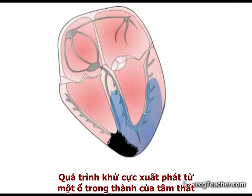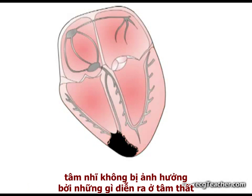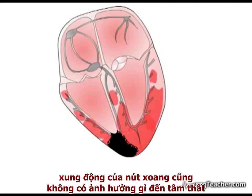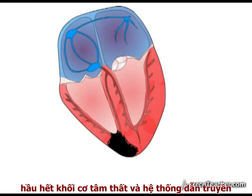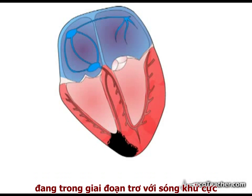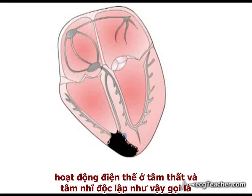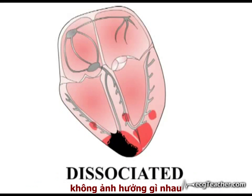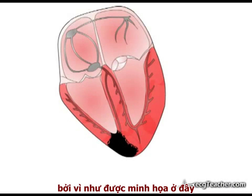Depolarization arising from a focus in the ventricle is not generally transmitted into the atria. Therefore, in VT the atria may remain uninfluenced by events in the ventricles, and the SA node carries on discharging at its own inherent rate. Equally, the SA node discharges have no effect on the ventricles, as the great majority of P waves arriving at the AV node find the conducting system and ventricular muscle mass refractory to depolarization due to the rapid rate of discharge from the abnormal focus. Electrical events in the ventricles and atria are dissociated — the two regions are both doing their own thing, uninfluenced by one another.